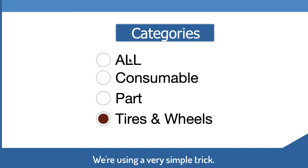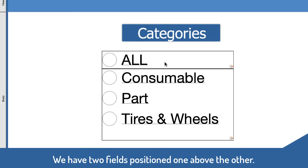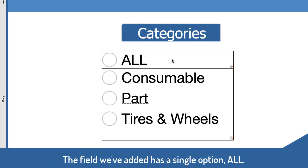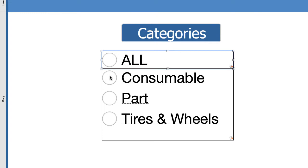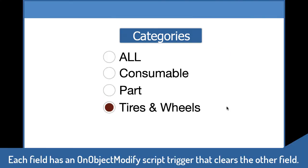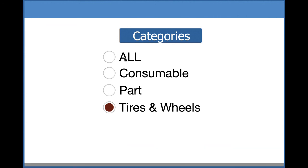It's very simple. We actually have two fields: one is a field called G flag, which has a single option — 'All' — and the other is our regular radio button with the values from the other list. Each of these two fields has an on-object-modify script trigger which clears the other field. Very, very simple.